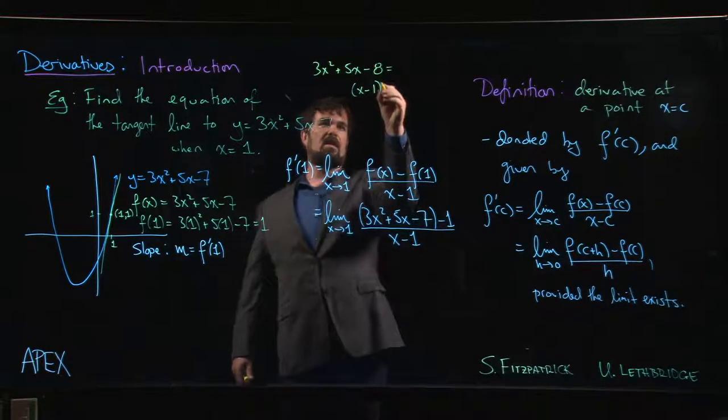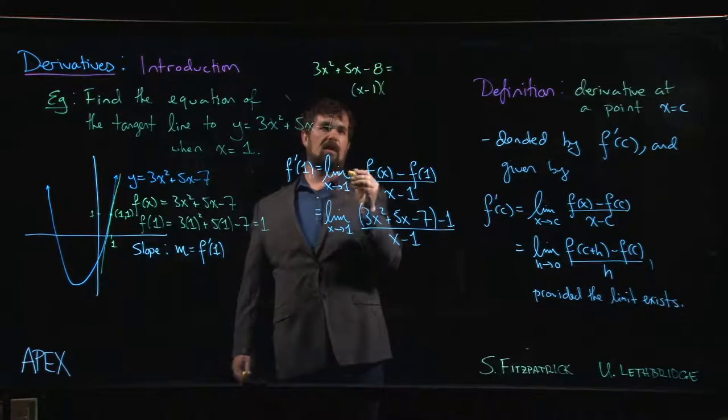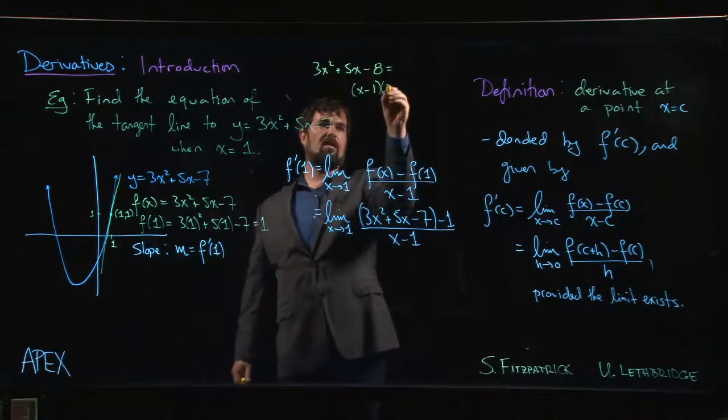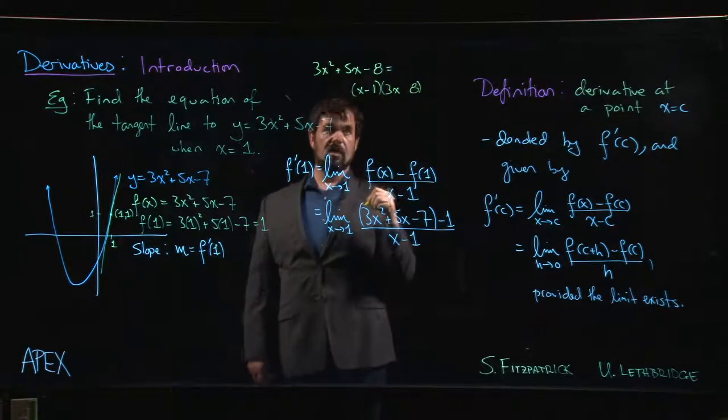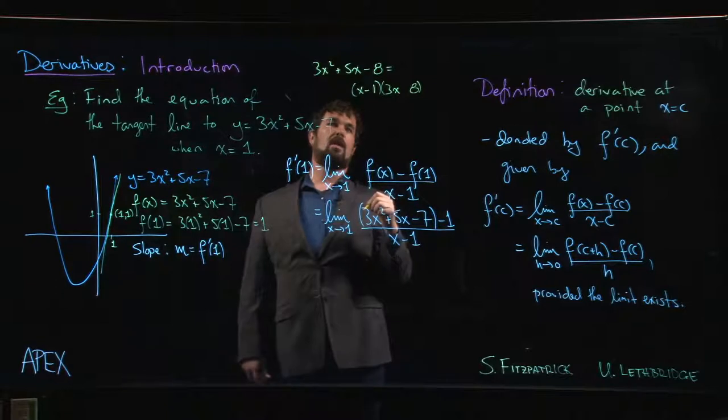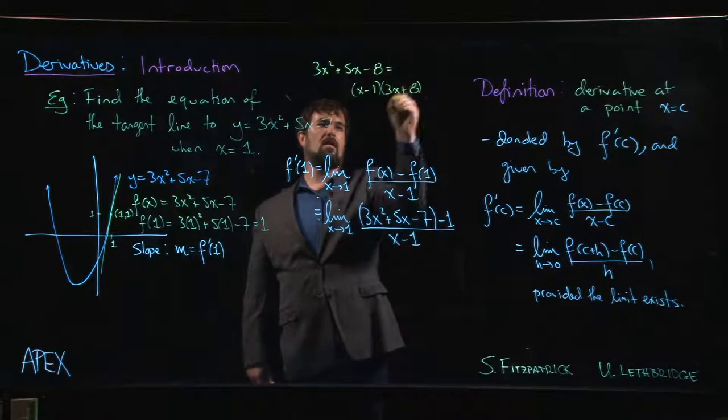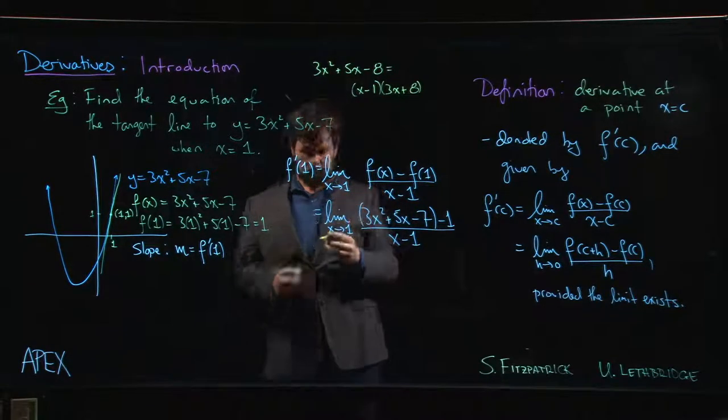So then we just have to figure out what the other factor is, and clearly it's going to have to have a 3x out front. It's going to have to have an 8 on the other side, and we want to end up with a plus 5, so we're going to need a plus sign there.